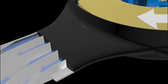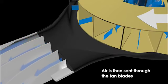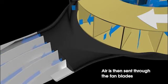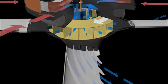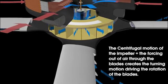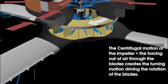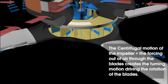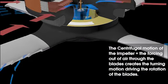Cool air from the evaporator core is thrusted from the impeller and through the fan blades. The centrifugal motion of the impeller plus the forcing out of air through the curved blades within the fins creates the turning motion, driving the rotation of the fan blades and providing optimal air distribution.